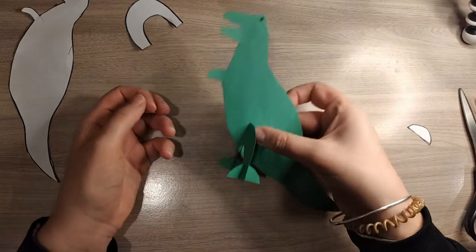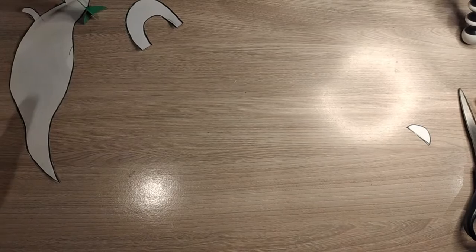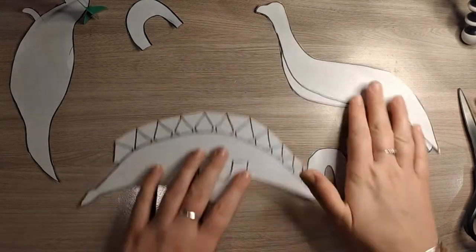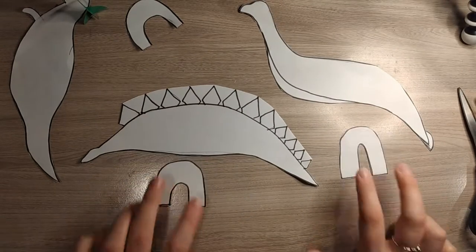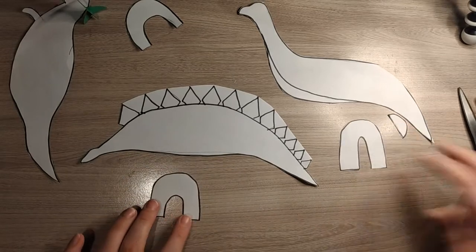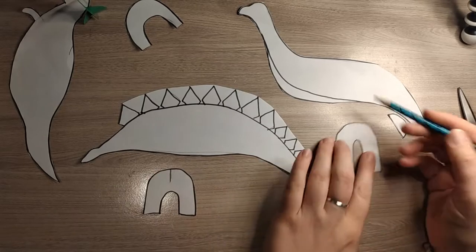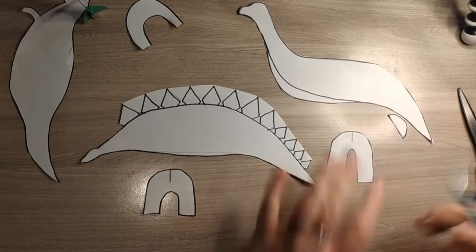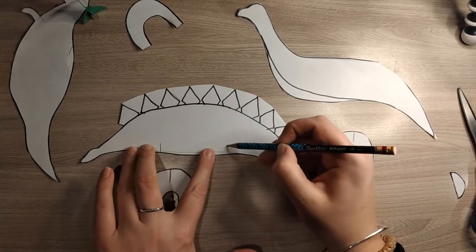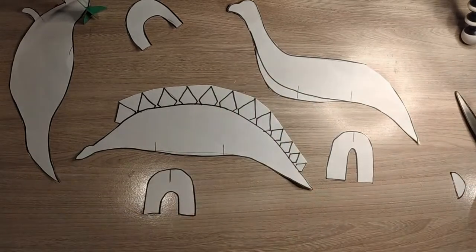So the same technique with the legs is going to be for each of the dinosaur templates. You can see for both of these two, you need to cut two sets of legs for each dinosaur. And again, you need to make sure you have a little snip in the top of the legs and also in the body to help them stand.